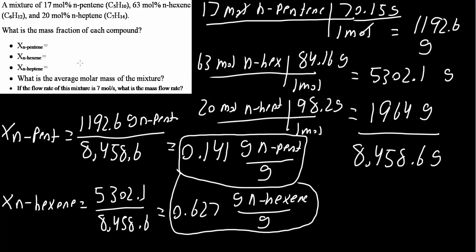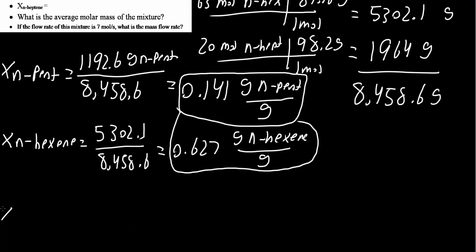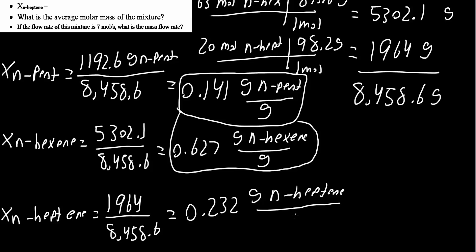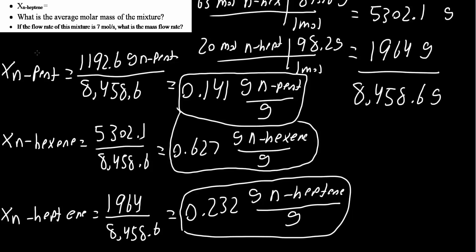Now we need the last one — heptene. The mass fraction of n-heptene equals 1964 divided by 8458.6, which gives us 0.232 grams of n-heptene per gram of mixture. So this completes the first part of our problem.